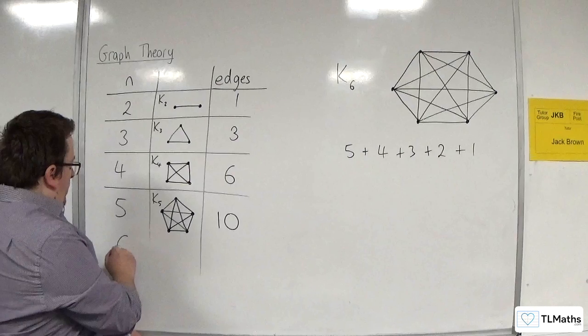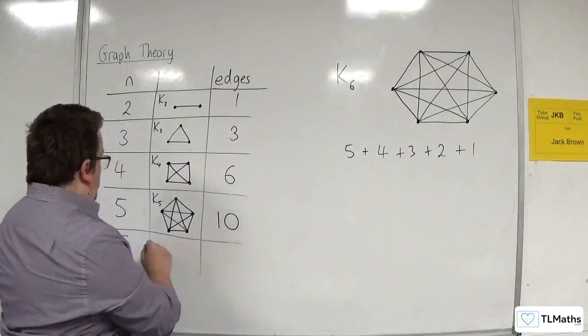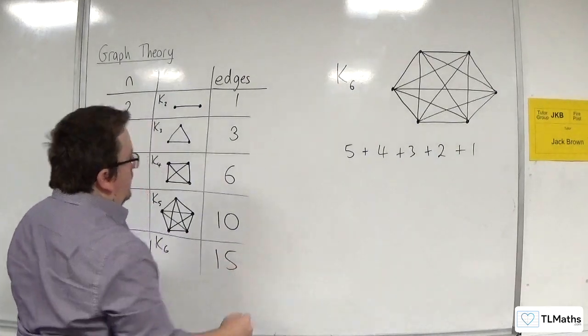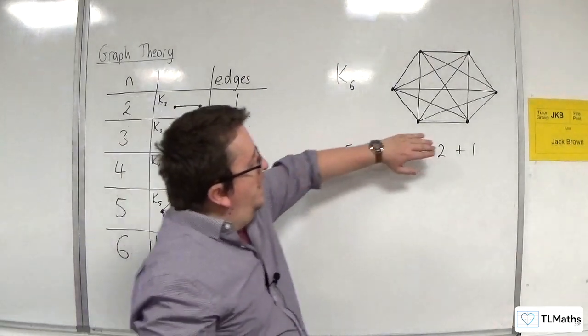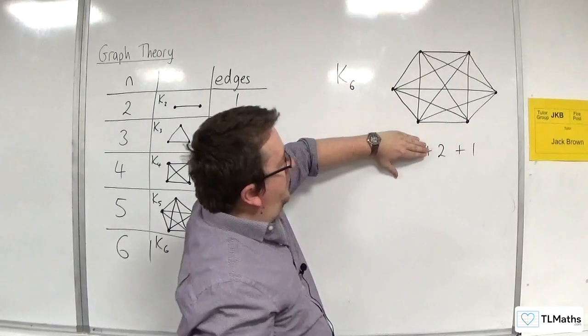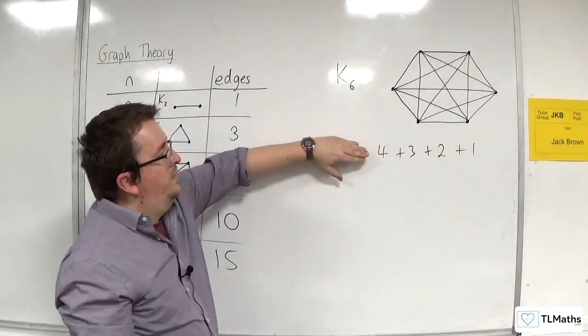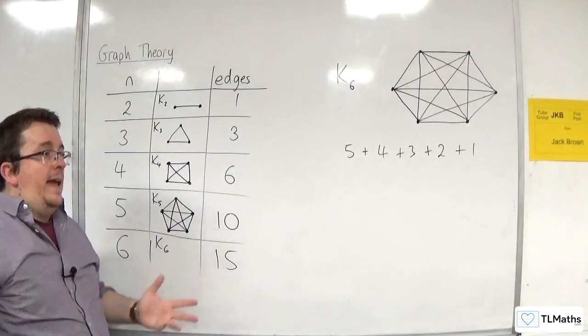So, 5 plus 4 plus 3 plus 2 plus 1. And so, for 6, the total number of edges would be 15. So, we start off with 1, then we add on 2, so we're going to get 3, then 6, then 10, then 15.